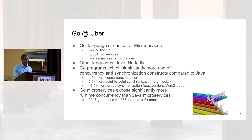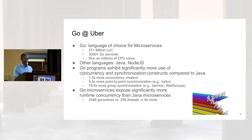There is about 18 and a half times more use of group synchronization in Go compared to Java — things such as barriers and wait groups. Wait groups are similar to barriers in Go. Clearly, Go code seems more complicated in terms of its concurrency and synchronization behavior statically. But even at runtime, Go microservices expose significantly more runtime concurrency than Java microservices. For example, when we profiled hundreds of thousands of processes in our data center, the average concurrency in Go programs was about 2,048 GoRoutines, whereas it was about 256 threads in Java — about eight times more in Go.